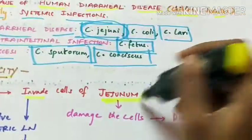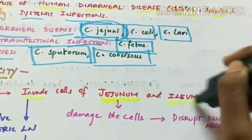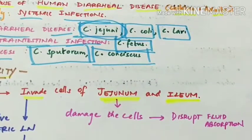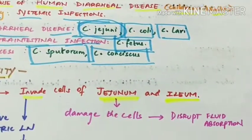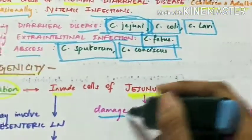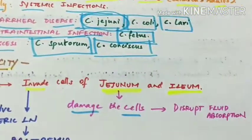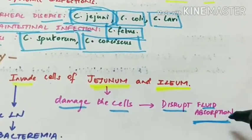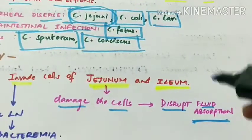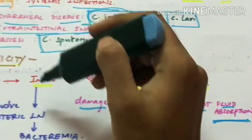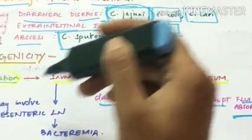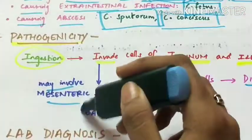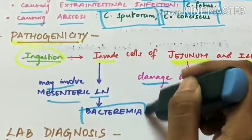Regarding pathogenicity, Campylobacter enters the body through ingestion. It invades the cells of the jejunum and ileum — parts of the small intestine — damages those cells, and disrupts fluid absorption. It may also involve mesenteric lymph nodes, leading to bacteremia.